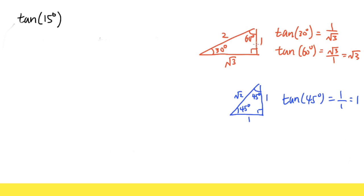We can also figure out tangent of 60 degrees by looking at that angle in this triangle. For 60 degrees, the opposite is square root of 3 and the adjacent is 1, so we have square root of 3 over 1, which is the same as square root of 3.